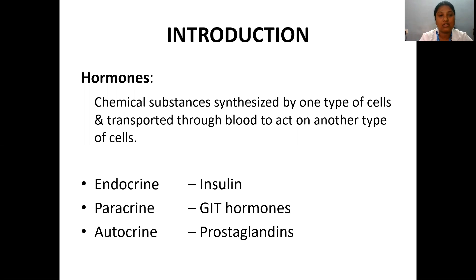The first is endocrine, the second is paracrine, and the third is autocrine. Endocrine means the substances are synthesized by one type of cells — the hormones — are secreted into the blood and reach their desired target cell, which is at a distance from the source of secretion.